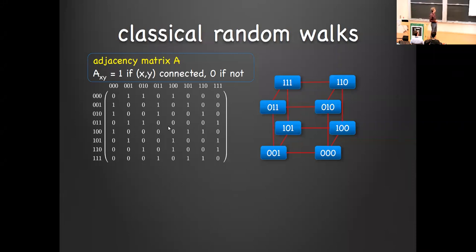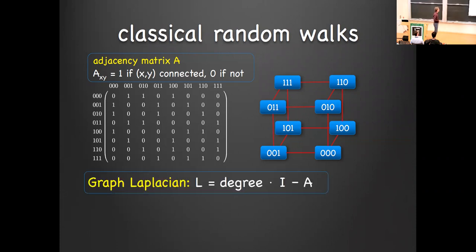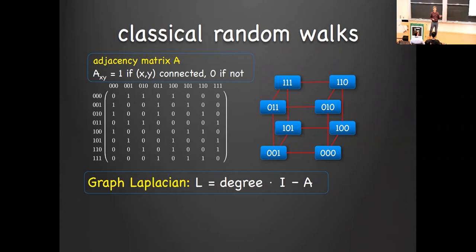To talk about quantum walks, let me set the stage by contrasting with classical random walks and defining some notation. Here's an example of a graph — the hypercube — which has an adjacency matrix with a one marking wherever the edges are and a zero where there's no edge. To define the walk it's sometimes more natural to talk about the graph Laplacian: you put along the diagonal the degree of each vertex, and for a regular graph that's just a multiple of the identity, and then you subtract the adjacency matrix.